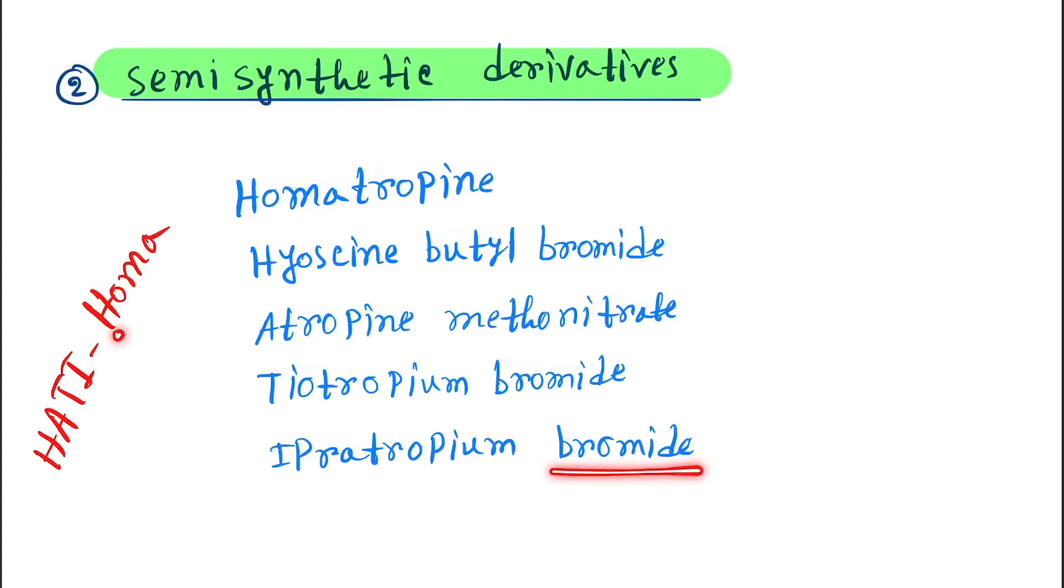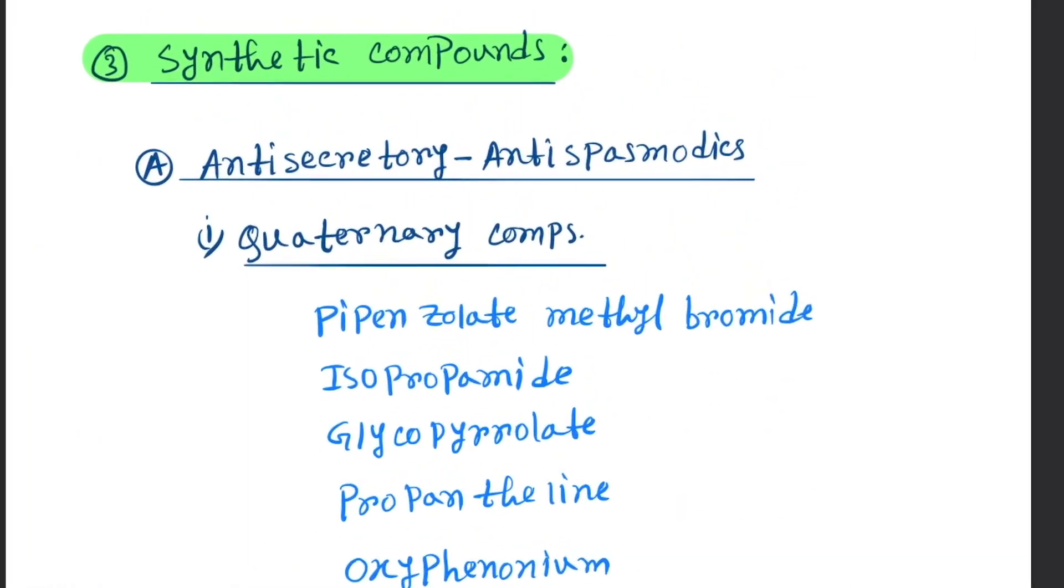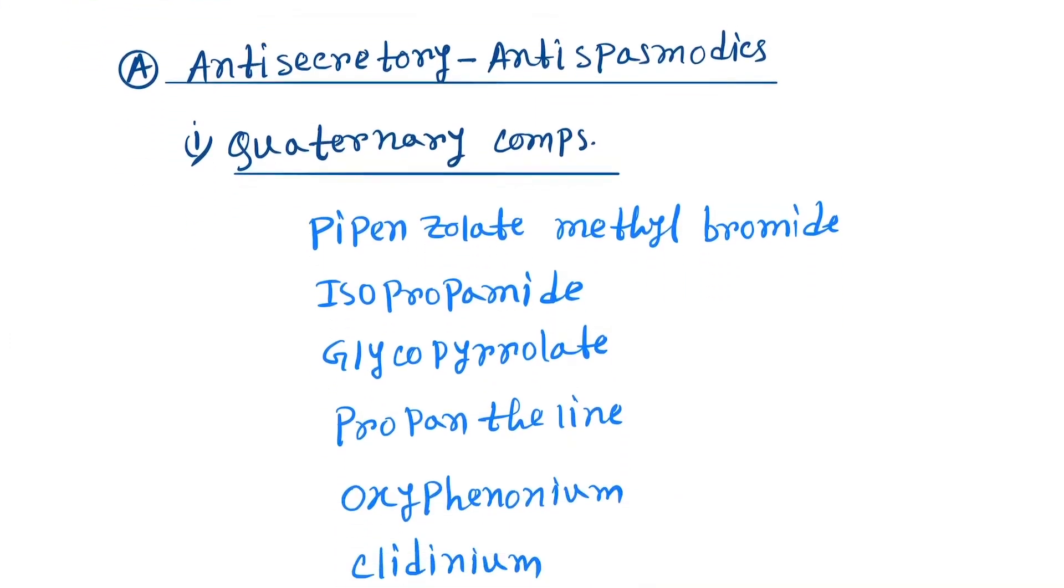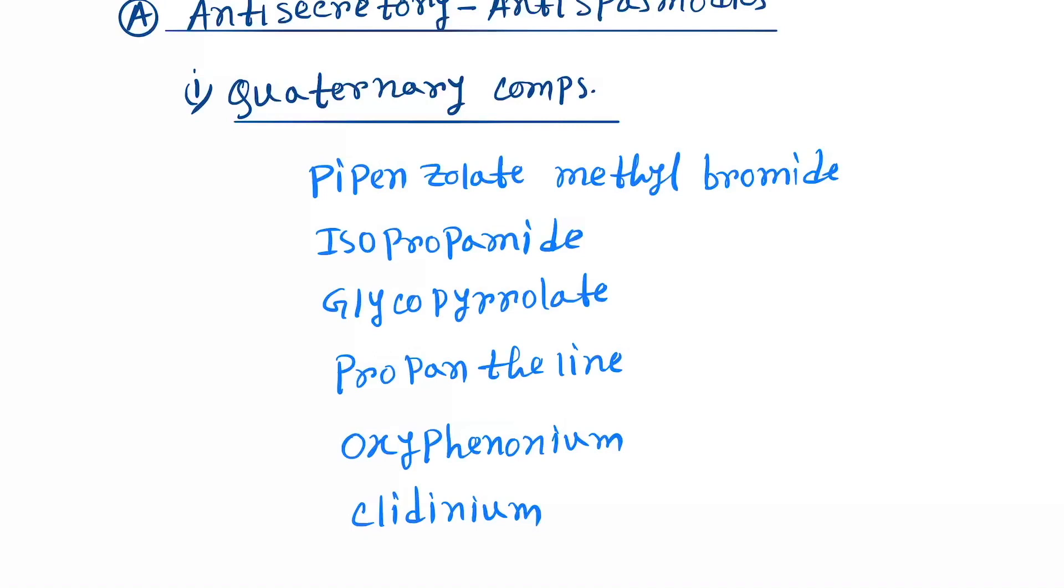Next is synthetic compounds. Here antisecretory-antispasmodics, first is quaternary compounds. You can remember PIPGPOC: P for pipenzolate methyl bromide, I for isopropamide, G for glycopyrrolate, P for propantheline, O for oxyphenonium, and C for clidinium.